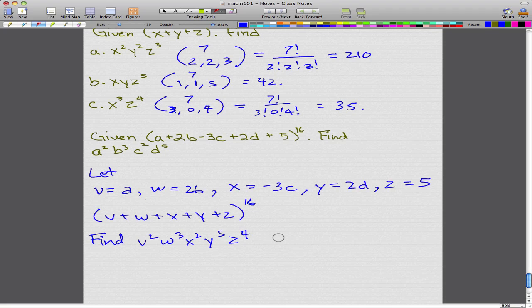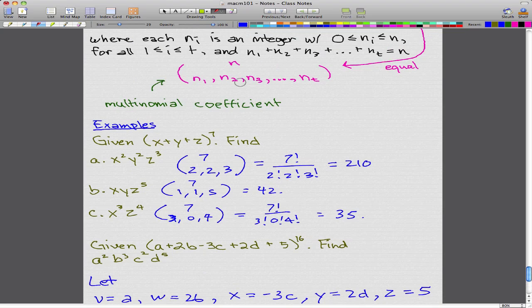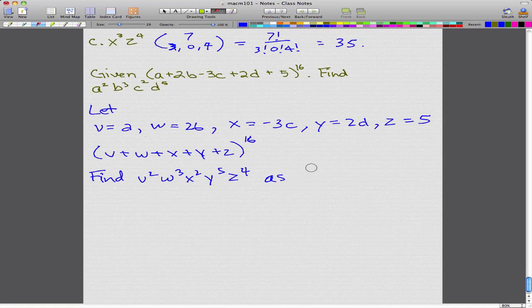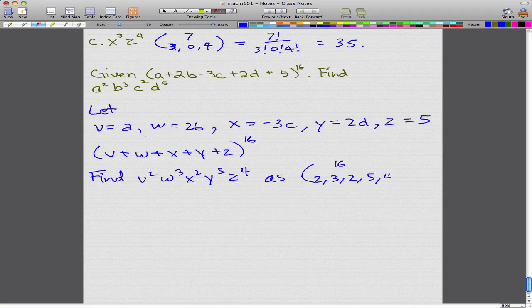Now that we have this, we can use that formula that we have from here to give us a coefficient. So 16 choose 2, 3, 2, 5, 4. And this will give us the coefficient, which gives us 302,702,400.